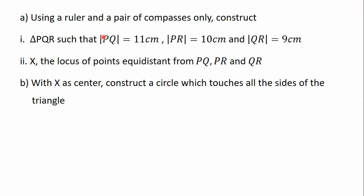The question is: Part A — using a ruler and a pair of compasses only, construct: Part I — triangle PQR such that PQ equals 11 centimeters, PR equals 10 centimeters, and QR equals 9 centimeters. Part II — construct X, the locus of points equidistant from PQ, PR, and QR. Part B — with X as center, construct a circle which touches all three sides of the triangle.